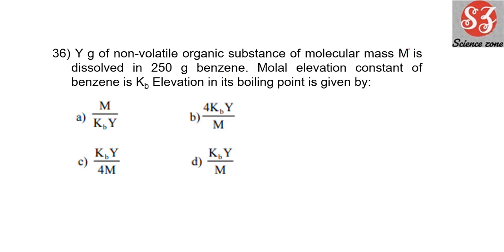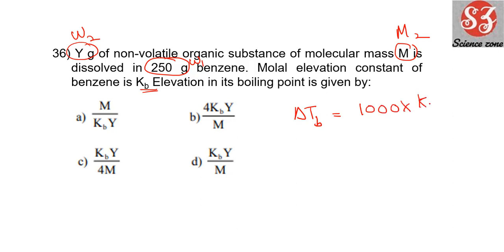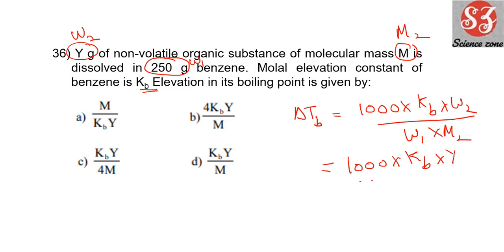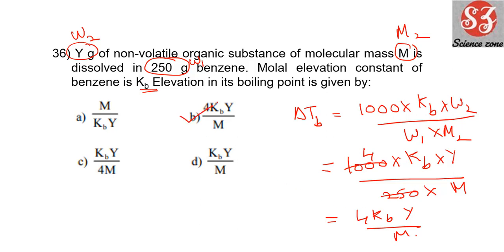Next: 'Y gram of non-volatile organic substance of molecular mass M is dissolved in 250 g of benzene. Molar elevation constant is Kb. Find the elevation in boiling point.' delta Tb = 1000 × Kb × W2 / (W1 × M2) = 1000 × Kb × Y / (250 × M). Simplifying — 250 goes into 1000 four times — giving delta Tb = 4KbY/M.